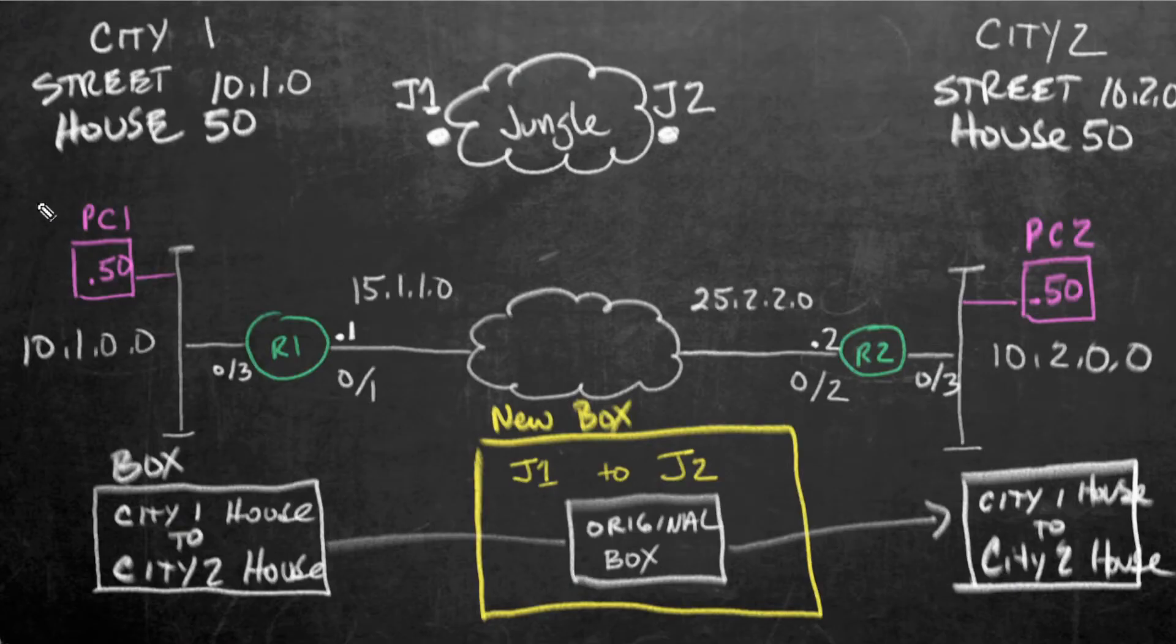So let's imagine it's PC1 acting as house one. It's on street 10.1.0. That's the network. Its host address is 50 and it has a default gateway of R1. So if PC1 was going to send a packet to PC2, it would forward it. It would get to this router right here. Now, instead of this router, and let's also imagine this is the jungle. Instead of this router forwarding it just based on the original source and destination IP addresses, if we have a tunnel set up, and I will put a logical tunnel here in that same jungle color to represent the new box.